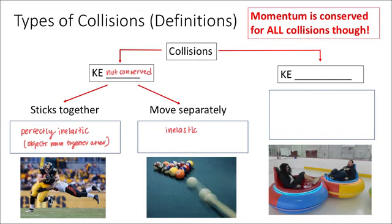Most collisions are inelastic and some are perfectly inelastic. Overall, most collisions in real life fall into one of these two categories. Kinetic energy is very rarely conserved in a collision. We call this very special condition — when kinetic energy is conserved — an elastic collision. Again, this is not typical of most collisions; most collisions do not conserve kinetic energy.